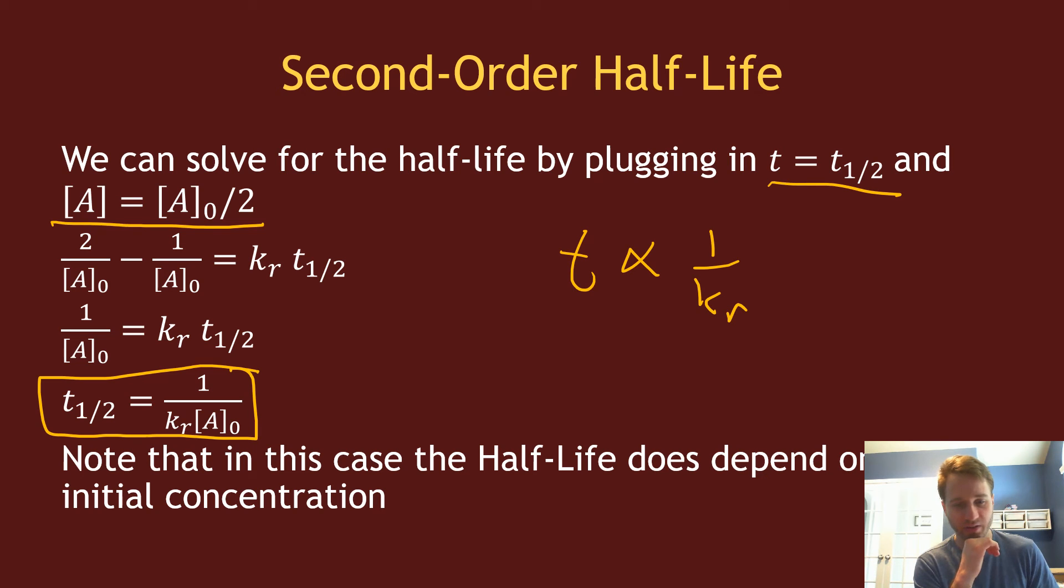For example, for a second-order reaction, it's one over the concentration. So the larger the concentration, the shorter the half-life, as we discussed in the previous video. This half-life does depend on what that initial concentration is, which makes it not as universal as a first-order reaction. For a first-order reaction, once you know the half-life for that specific reaction, you know it no matter what the initial concentration is.